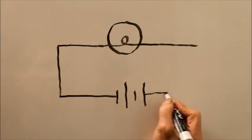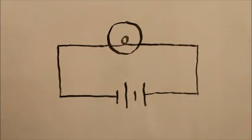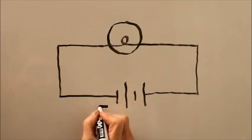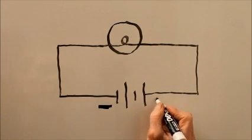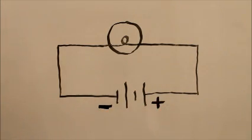And here is the schematic symbol for our little electrochemical battery. Now normally in an electrochemical battery the short line is the negative and the long line is the positive terminal of the battery.